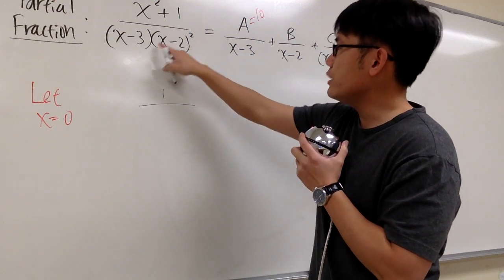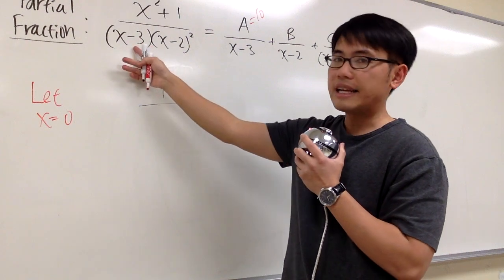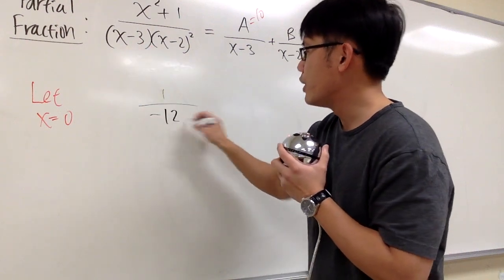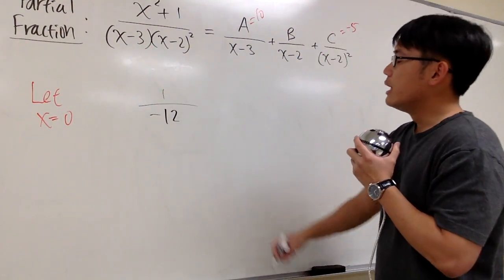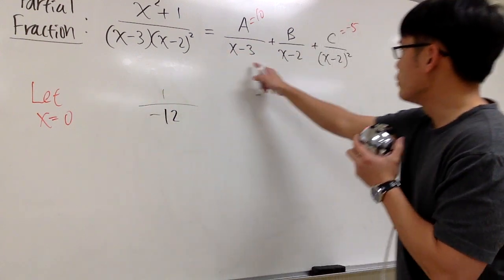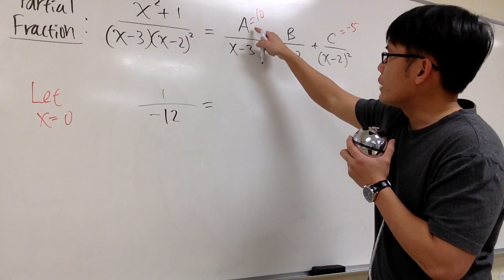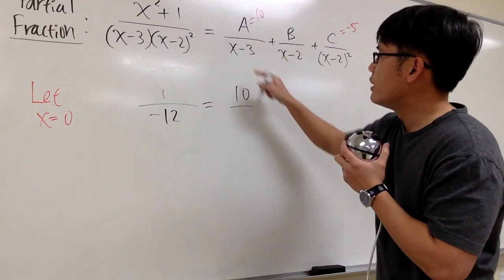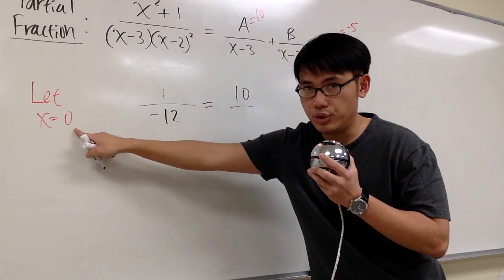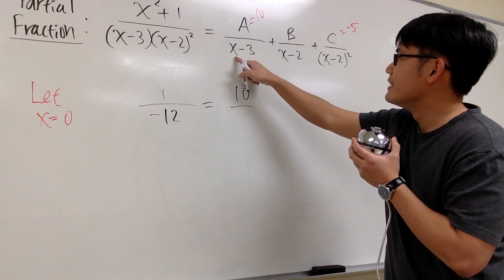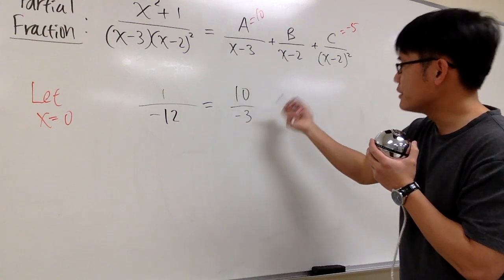So you get negative 2 squared which is 4, times negative 3, we have negative 12 when x is equal to 0. But you have to plug in 0 into all this x now. On the top, we know A is equal to 10, so we have 10 over 0, because we choose x equal to 0. 0 minus 3, which is negative 3.